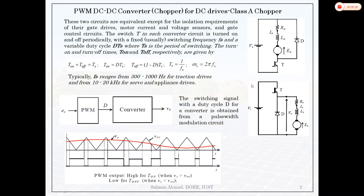First I will take pulse width modulation for DC-DC converter. Here you can see this is Class A chopper — we can have it by either of these two circuits. They are actually equivalent circuits but there is some difference, like isolation requirements of their gate drives, motor current and voltage sensors, and gate control circuits. There is some different requirement for both circuits; otherwise their working is the same.